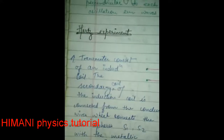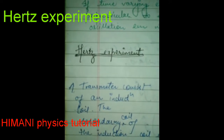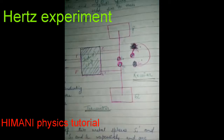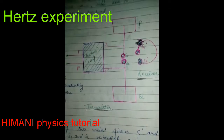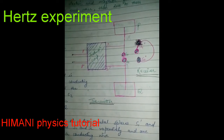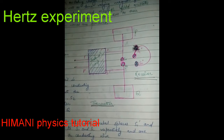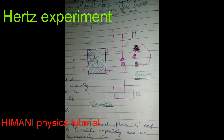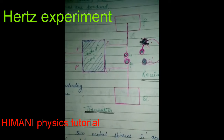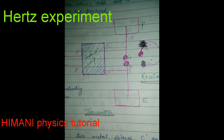For the production of EM waves, a scientist named Hertz gave his experiment — the Hertz experiment. The setup of the Hertz experiment was such that there was a transmitter side and a receiver side. On the transmitter side, there was an induction coil with a primary and secondary coil.